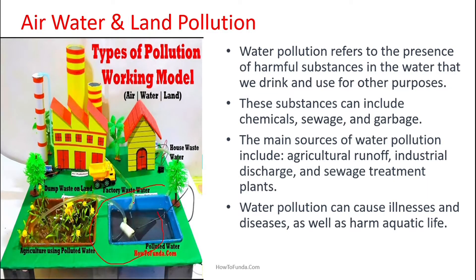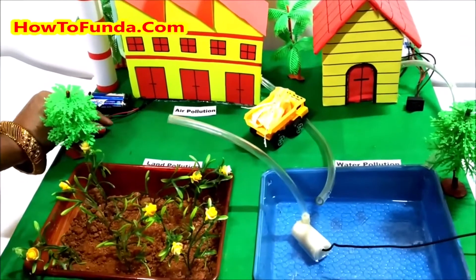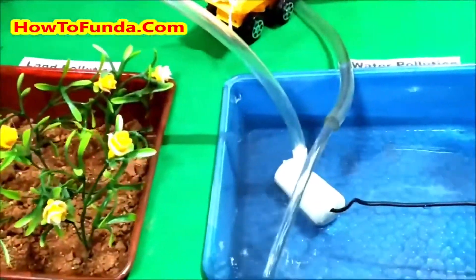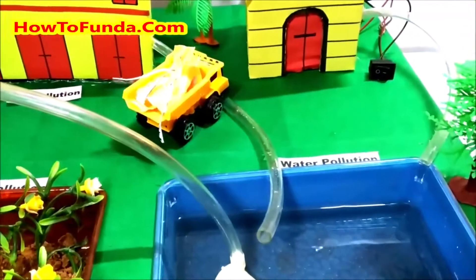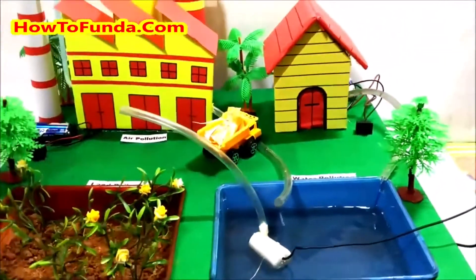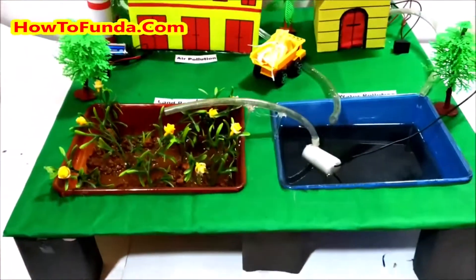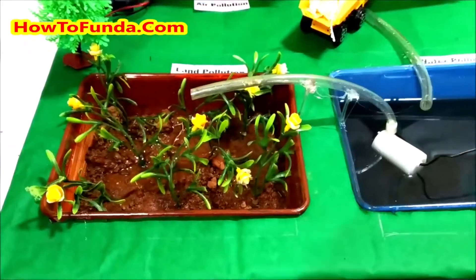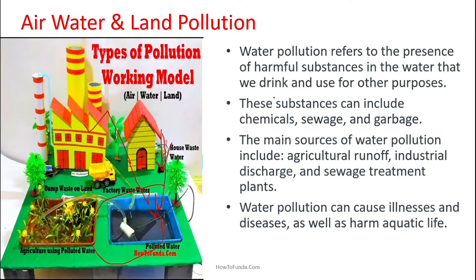Water pollution can happen from factories — whatever water is supplied to a factory is sent back into lakes. Individual household sanitary waste is also dumped into rivers or tanks. Water that was once used for drinking is now getting contaminated with chemicals, sewage, and garbage, making it very harmful.